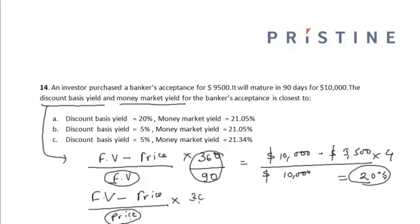Times 360 divided by 90. That will be equal to $10,000 minus $9,500 divided by $9,500, times 4, is equal to: